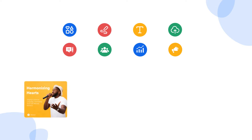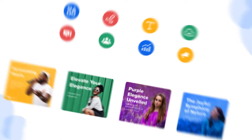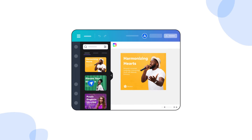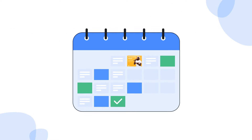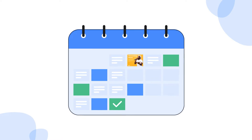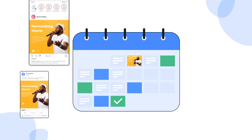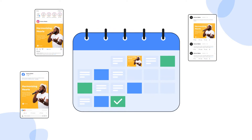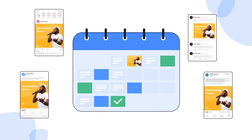This means all your beautifully created artwork on Canva will reach multiple social media platforms instantly. With just a few clicks, users can ensure their content is ready to be published.